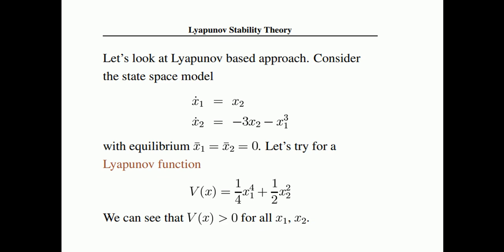Consider the state space model: x₁-dot equals x₂, and x₂-dot equals −3x₂ − x₁³. We will discuss how to build state space models in the control systems lecture series. From this model we have our derivatives x₁-dot and x₂-dot. Now assume a Lyapunov function — this is an energy-like function — for example V(x) = ½x₁⁴ + ½x₂². Check the first condition: when x₁ and x₂ are both zero, V equals zero. That is satisfied.